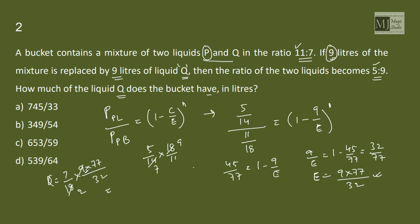So Q was 7 by 18th part of 9 into 77 by 32, 9 times 2, 77 into 7, 9, 4, 5, 3 by 64, 5, 39 by 64 liters. Option D.